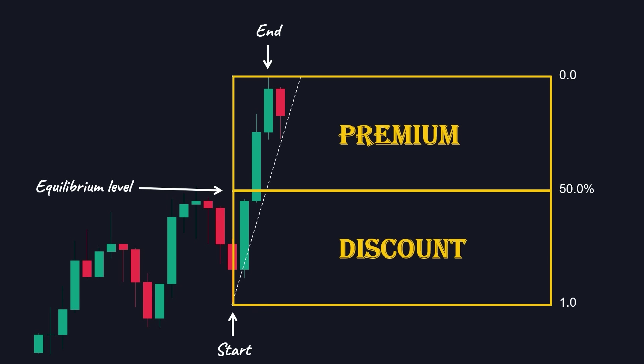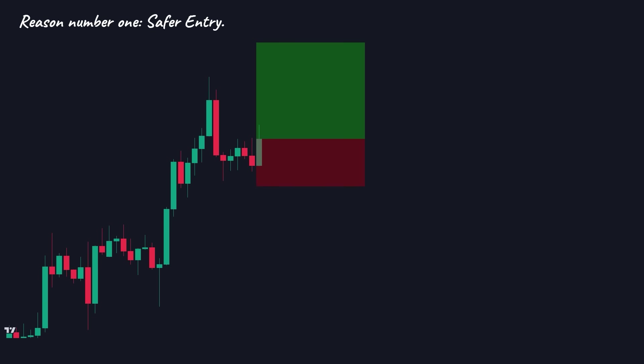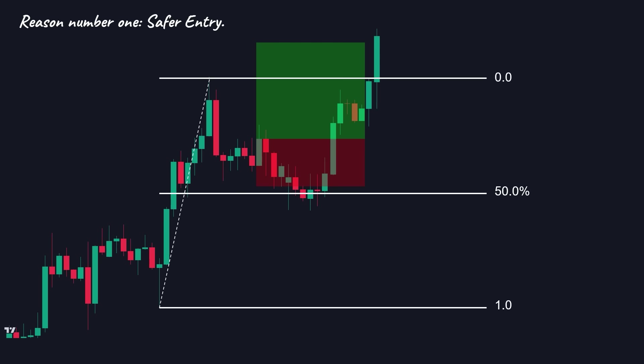When the market sentiment is bullish and we have an uptrend, we want to buy in the discount zone for multiple reasons. Reason number one: safer entry. The market loves to take out early buyers and use them as liquidity for future movements. So waiting for the price to enter the discounted zone and then looking for signals to go long will instantly increase our win rate. Of course, every strategy has its downsides. In this case, we might miss some trades due to conservative trading. But a missed trade is always better than a losing one.